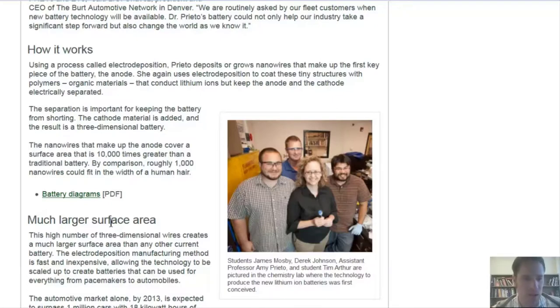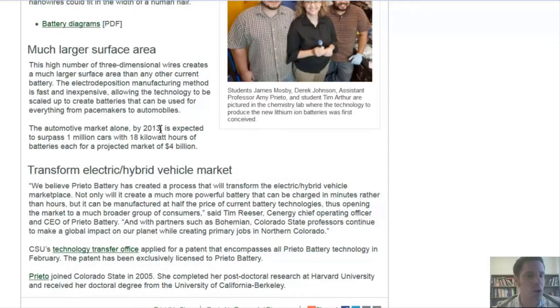The nanowires that make up the anode cover a surface area that's 10,000 times greater than a traditional battery's. By comparison, roughly 1,000 nanowires could fit in the width of a human hair. This high number of three-dimensional wires creates a much larger surface area than any other current battery. The electrodeposition manufacturing method is fast and inexpensive, allowing the technology to be scaled up to create batteries that can be used for everything from pacemakers to automobiles.